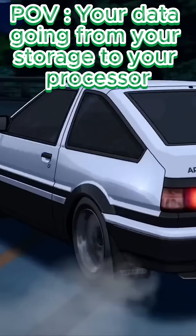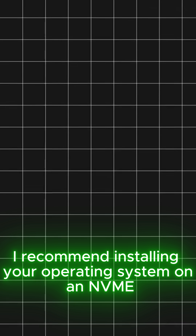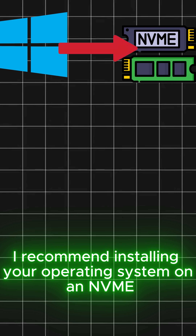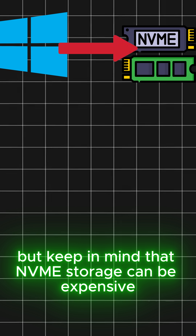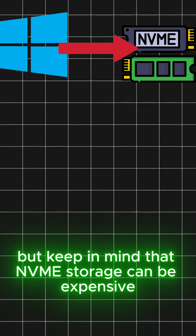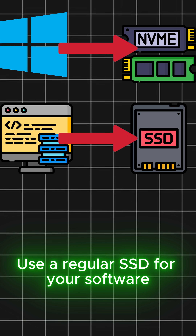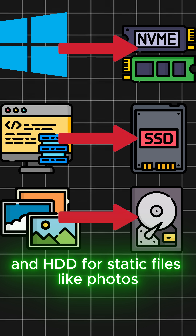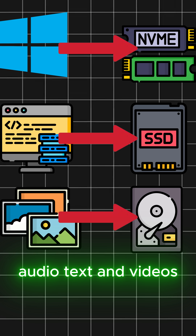Quick tip: I recommend installing your operating system on an NVMe drive, but keep in mind that NVMe storage can be expensive. Use a regular SSD for your software, and an HDD for static files like photos, audio, text, and videos.